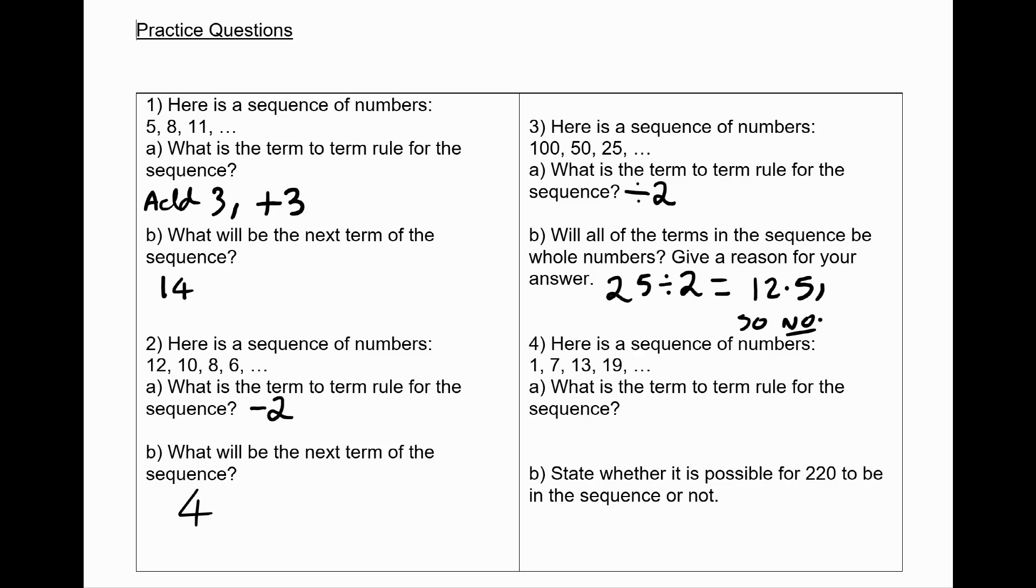In question 4, the term-to-term rule seems to be that we are adding 6 every time. State whether it is possible for 220 to be in the sequence. To answer this question, we need to look at the kinds of numbers that seem to be in the sequence. 1, 7, 13, 19. The next term is going to be 25, and so on. These are all odd numbers. 220 is even, and because all of the numbers in the sequence seem to be odd, we can say 220 is not going to be in the sequence, so no.